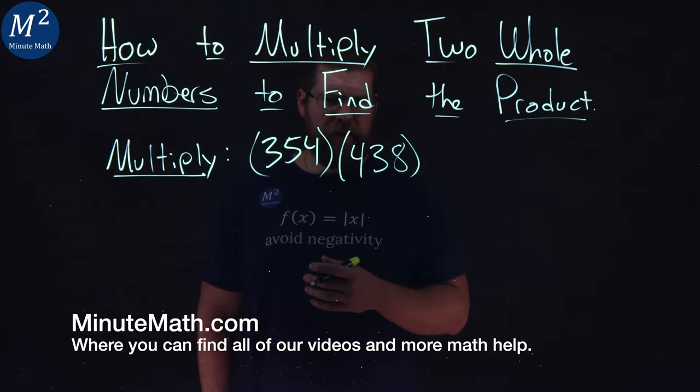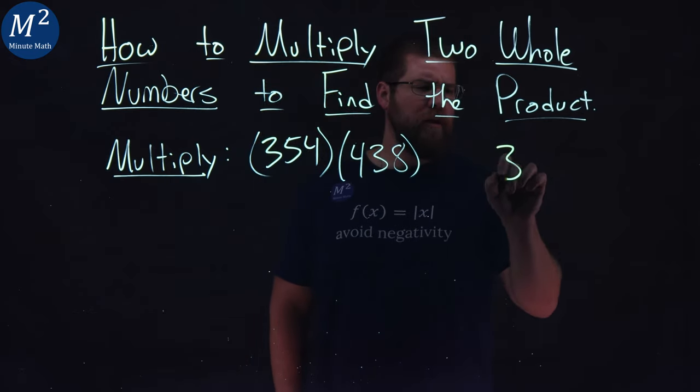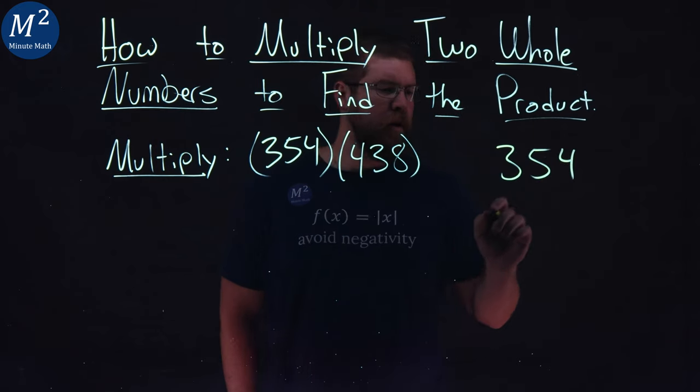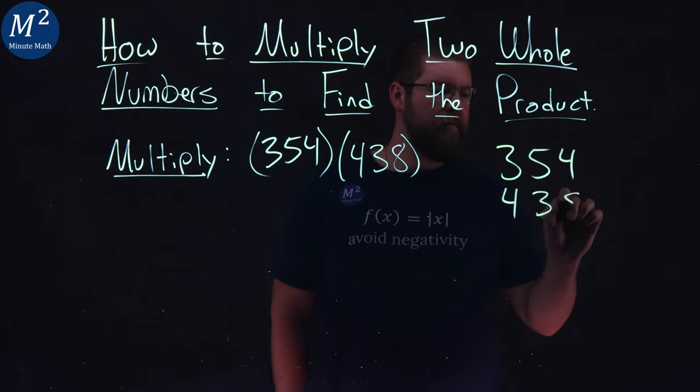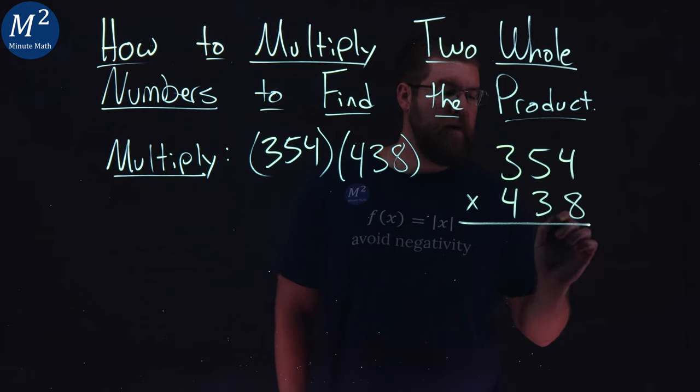We're going to use the traditional method here. I'm going to start with my 354 on top here and underneath it, 438, and we're going to multiply that out.